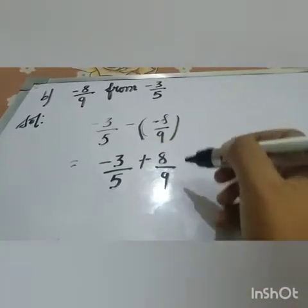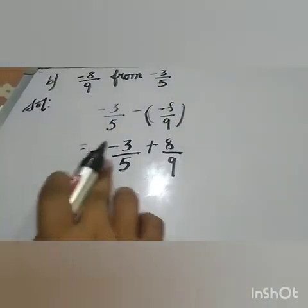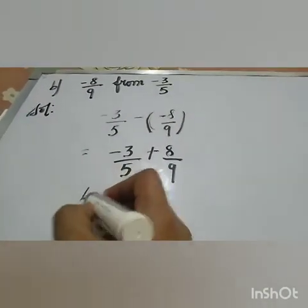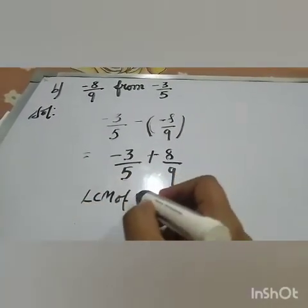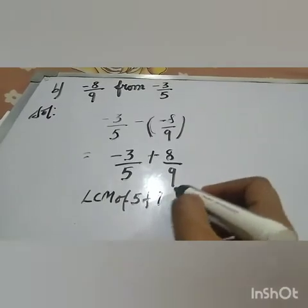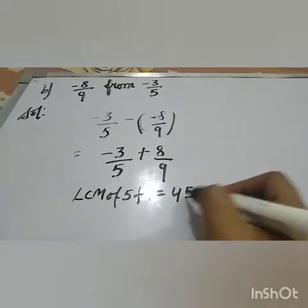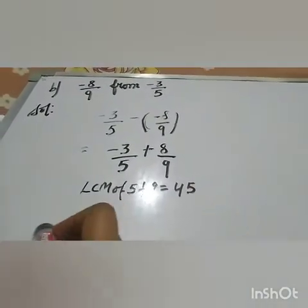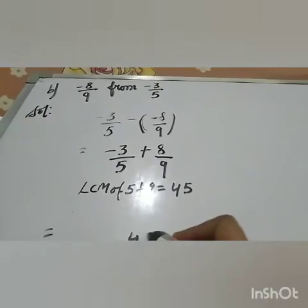So you write minus 3 by 5 minus minus 8 by 9. Minus minus, that is plus 8 by 9. Now take the LCM of 5 and 9, which is equal to 45.